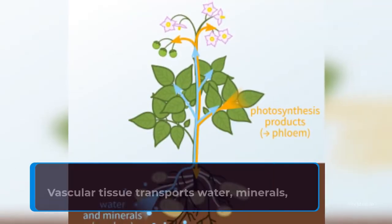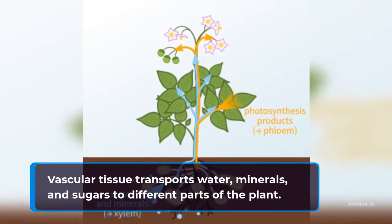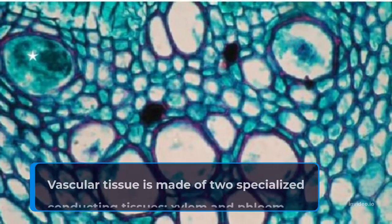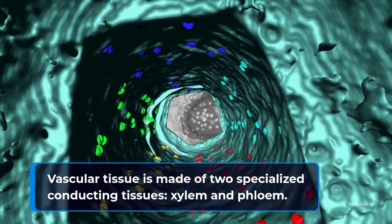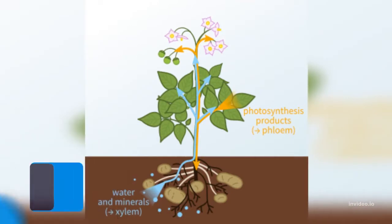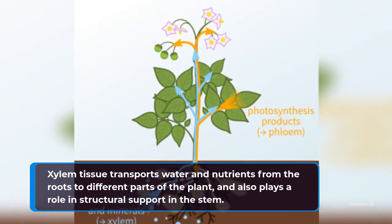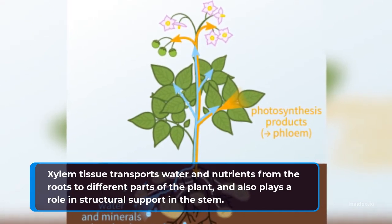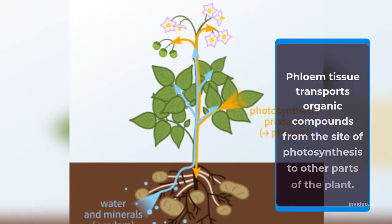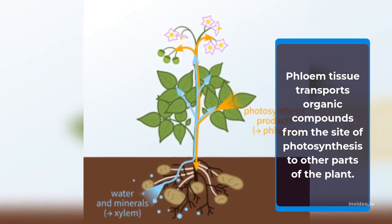Vascular tissue. Vascular tissue transports water, minerals, and sugars to different parts of the plant. Vascular tissue is made of two specialized conducting tissues: xylem and phloem. Xylem tissue transports water and nutrients from the roots to different parts of the plant, and also plays a role in structural support in the stem. Phloem tissue transports organic compounds from the site of photosynthesis to other parts of the plant.